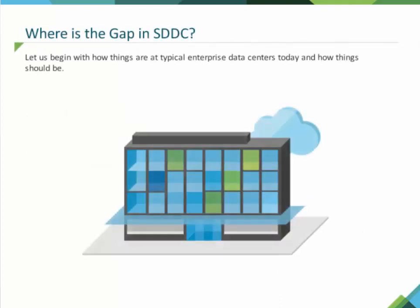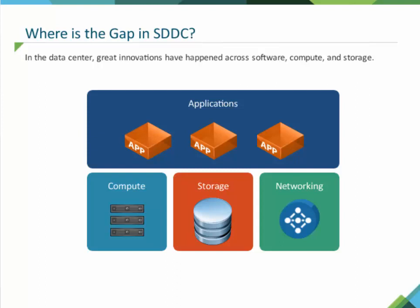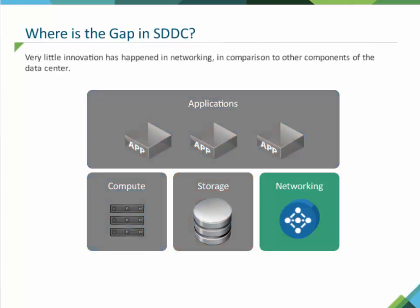Let us begin with how things are at typical enterprise data centers today and how things should be. As previously discussed, great innovations have happened across software, compute, and storage in the data center. However, when you get to networking, it becomes very clear that very little innovation has happened in comparison to other components of the data center. Everyone is feeling the pain of legacy networking and security architectures.